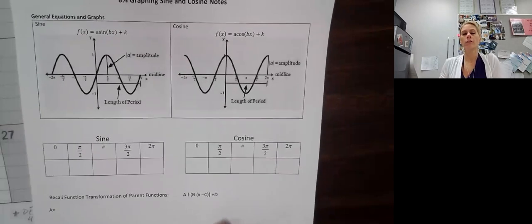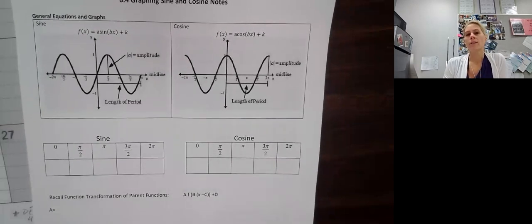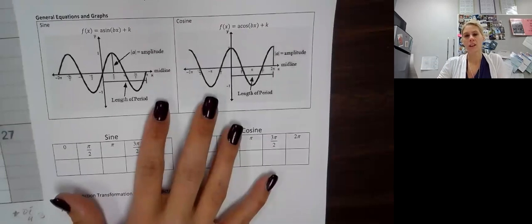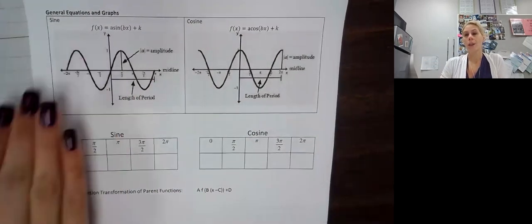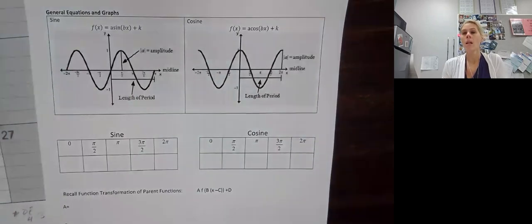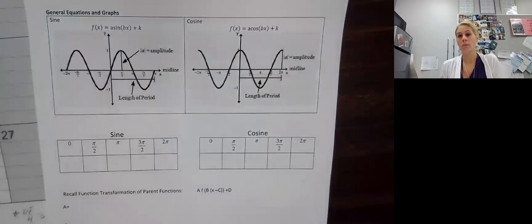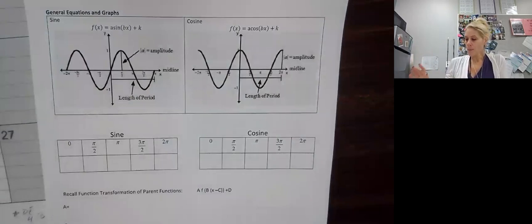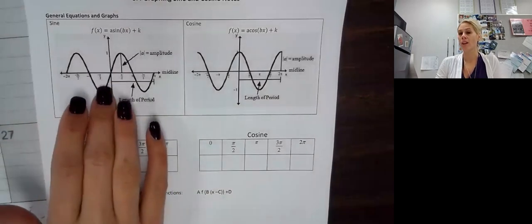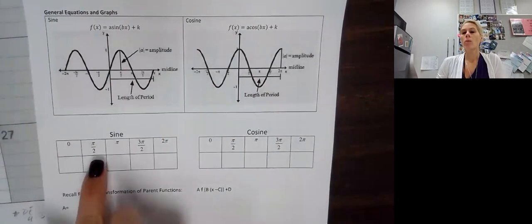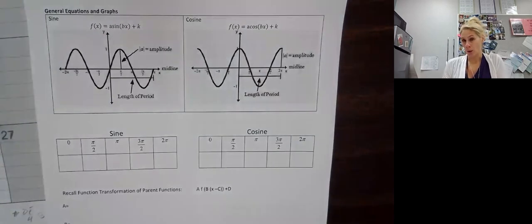So first of all, these are the graphs of sine and cosine. Right at first, we're going to pay attention to sine because that is where our secondary 3 is going to focus on today. And then I'll come back to cosine where the honors can pick up. So what I want to do is match this graph above — our parent function of sine — with what we learned in our unit circle.